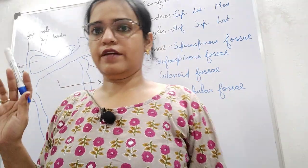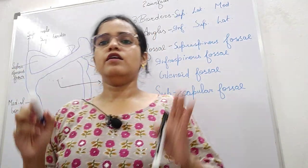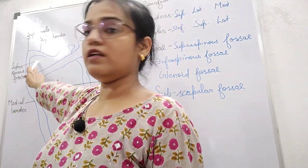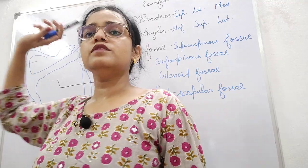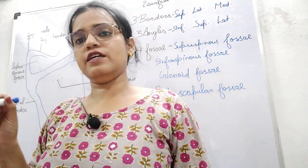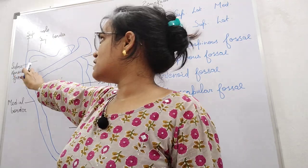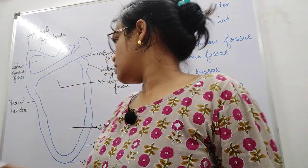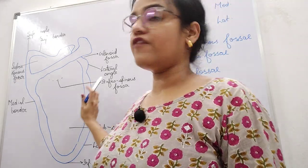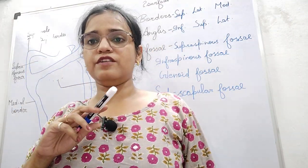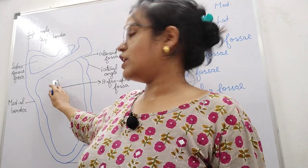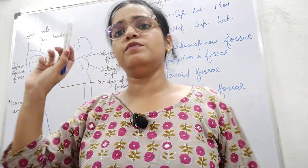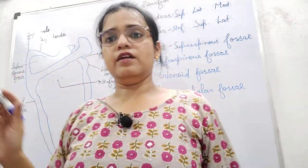Now coming to the fossae. First of all, the supraspinous fossa — we can locate it here. Supraspinous fossa is concave in nature, and the supraspinatus muscle arises from here. If we talk about the infraspinous fossa, you can locate it here, and the infraspinatus muscle arises from here.